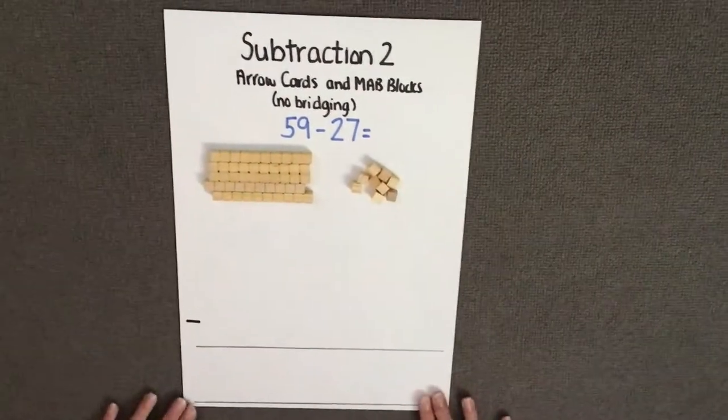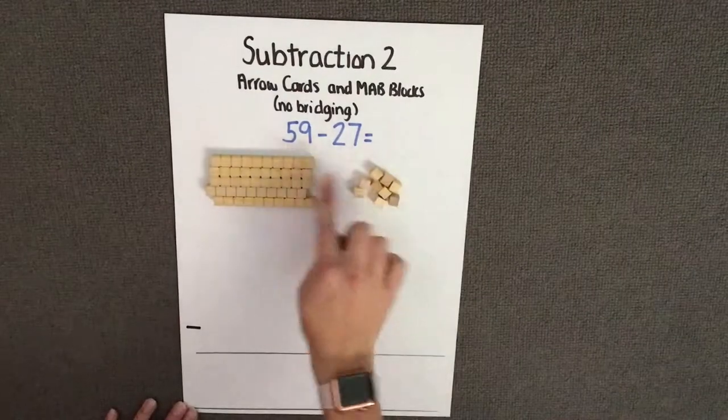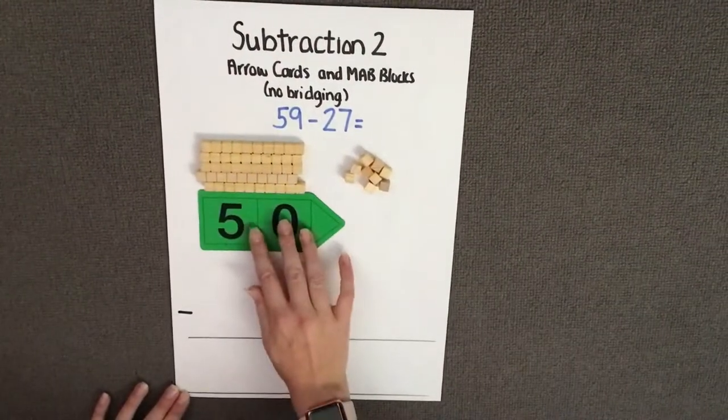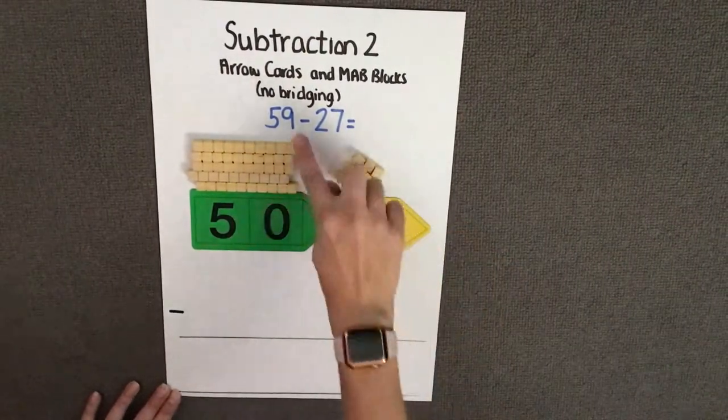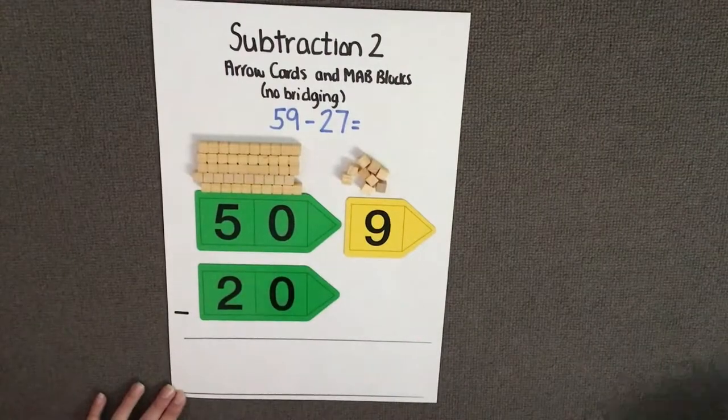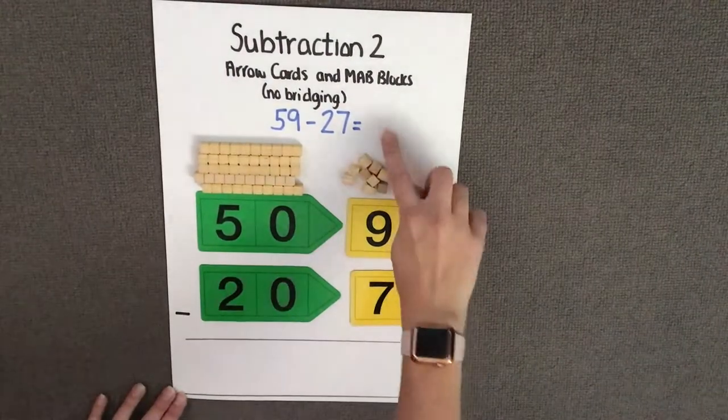I can then use the arrow cards to show how each number in my sum is partitioned. So I need a 50 for my 5 tens and 9 to represent my 59, and I need a 20 or 2 tens and a 7 ones to represent my 27.